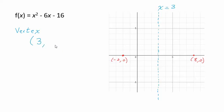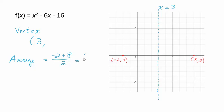But what if you don't have a graph, or the numbers are messy? The halfway point between any two numbers is their average. We add the two numbers together and divide by 2. So negative 2 plus 8 is 6, divided by 2 is 3. The average of the x-intercepts gives you the x-value of the vertex.